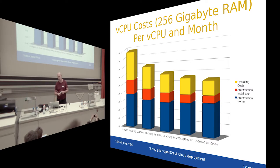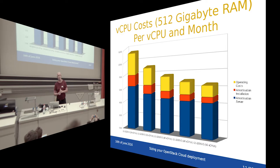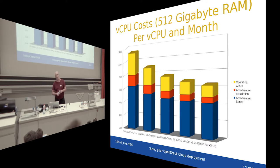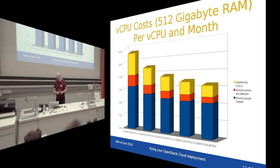Interestingly, especially looking at how high salaries are in Switzerland, the more CPUs or cores I have, the cheaper each vCPU becomes — the actual vCPU gets cheaper the more I pack into one machine. Out of curiosity, I did the same calculation with 512 GB of RAM, and the result is essentially the same, just with a small offset for the memory.